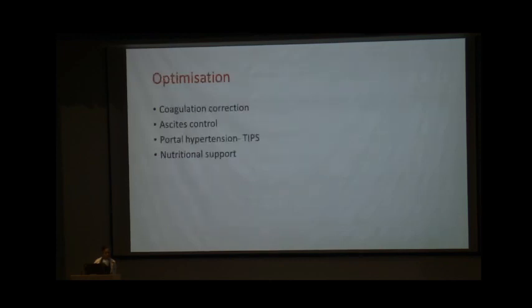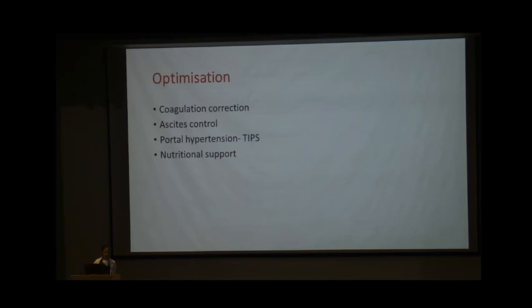Before undertaking surgery, patients should be optimized: coagulation corrected, ascites controlled. If there are extensive collaterals and clinically significant portal hypertension, patients may benefit from TIPS — by analogy with its use in non-hepatic surgery, pressures should reduce after one to two weeks, making surgery safer. Nutritional support to build up albumin levels should also be provided.